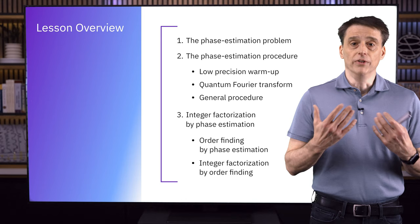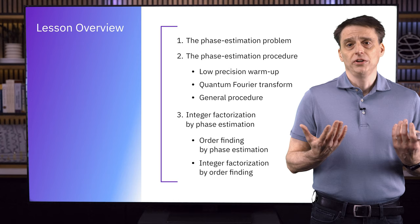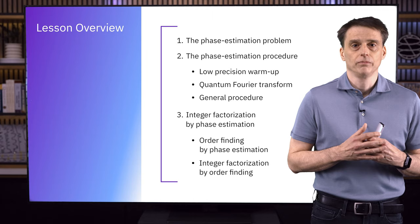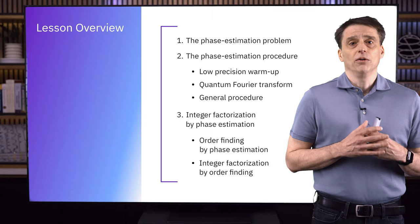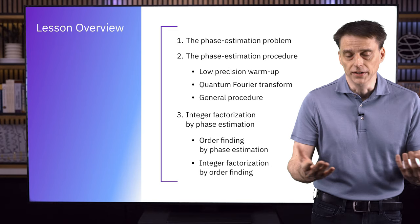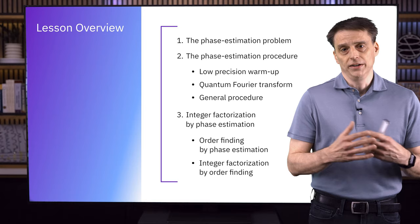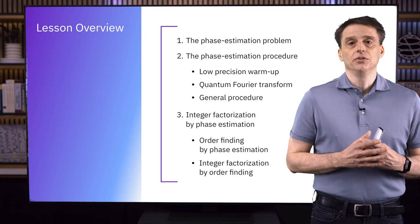We'll then discuss the issue of how we can get more precision, which will lead very naturally to an operation known as the quantum Fourier transform. We'll see exactly what this operation is and how it can be implemented with a quantum circuit. Once we have it, we'll apply it to phase estimation to come up with a general procedure for solving the problem with very high precision. Then, in the last part of the lesson, we'll see how a solution to the phase estimation problem allows us to factor integers efficiently using Shor's algorithm, via an intermediate problem called the order-finding problem.